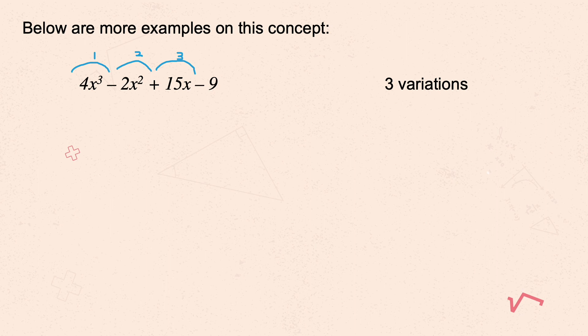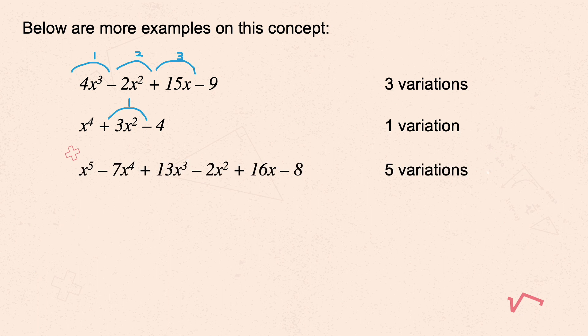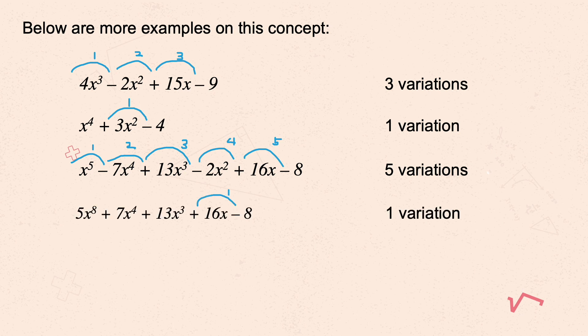In the second example, we only have 1 variation. In the third example, we have 5 variations — just count the alternating symbols of terms. In the last example, we only have 1 variation, and that is from positive 16x to negative 8.